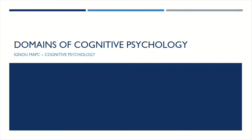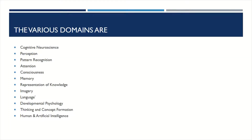Now let us look at the various domains of cognitive psychology. Modern cognitive psychology freely draws theories and techniques from 12 principal areas of research: cognitive neuroscience, perception, pattern recognition, attention, consciousness, memory, representation of knowledge, imagery, language, developmental psychology, thinking and concept formation, and human and artificial intelligence.